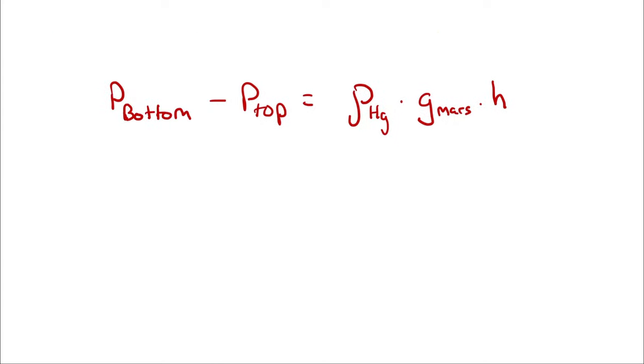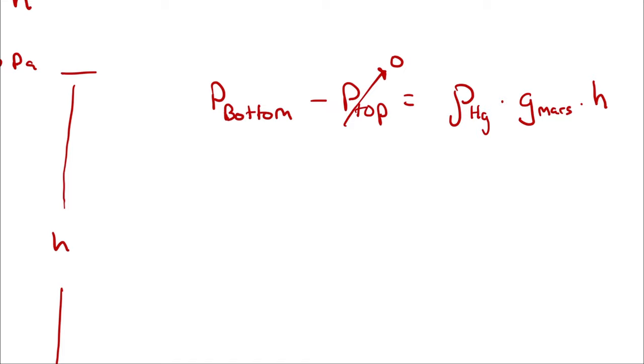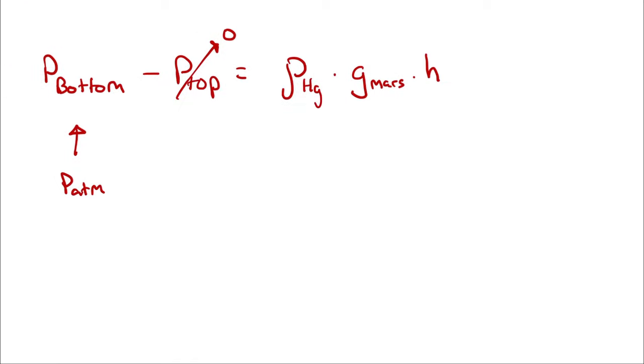P top we know, that's 0. P bottom is atmospheric pressure. Gravity of Mars we know, and the density of mercury we can look up.